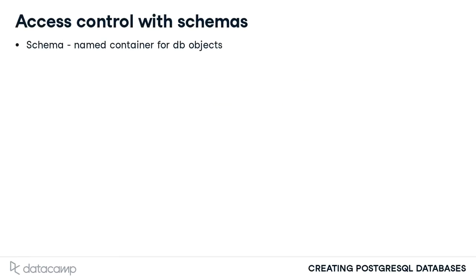Previously, we covered schemas as a database object that can be used as a named container for database objects such as tables. Granting privileges specific to different schemas in a database can be used to easily control access to multiple objects simultaneously.